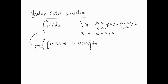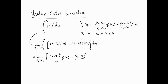We can easily proceed to integrate this — remember x0, x1, f(x0) are all constants. Leaving the (x1 − x0) factor outside, after integration we have (x − x0)²/2 · f(x1) minus (x − x1)²/2 · f(x0), evaluated from x0 to x1.